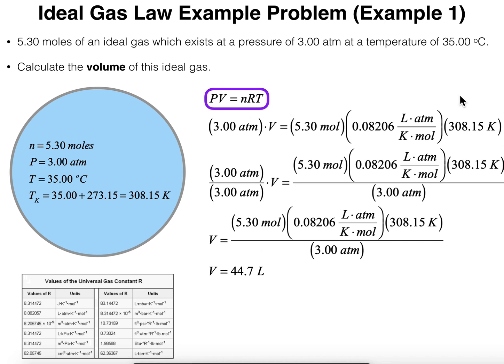Now we can more or less just plug in numbers and we'll see what our answer is. Remember, we're solving for volume because that's the variable we don't know. So I'm going to plug in numbers. For our pressure, P is 3.00 atmospheres times volume, because volume we don't know, equals our N is 5.30 moles times our R. Again, I'm selecting purposely this 0.08206 and then times the temperature in Kelvin, 308.15 Kelvin.